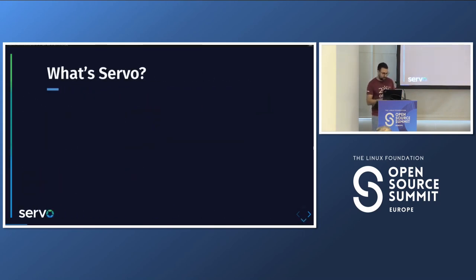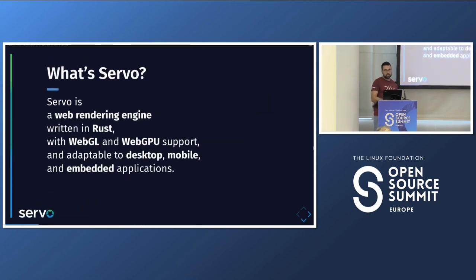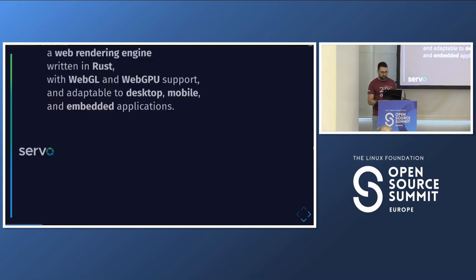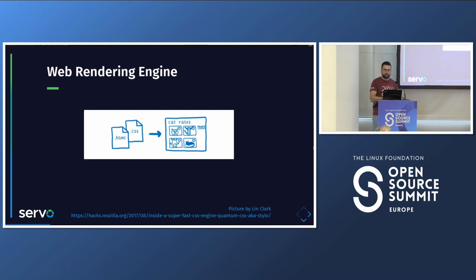So what is Servo? Servo has this long definition: it's a web rendering engine written in Rust, it has support for WebGL and WebGPU, it's cross-platform for desktop and mobile, and it can be used for embedded applications. We are going to go through this definition step by step to understand it better.